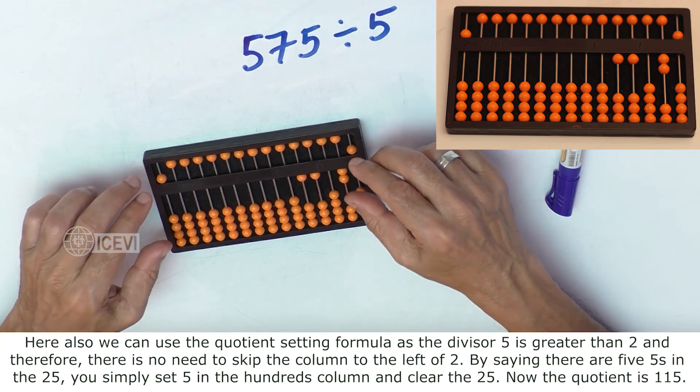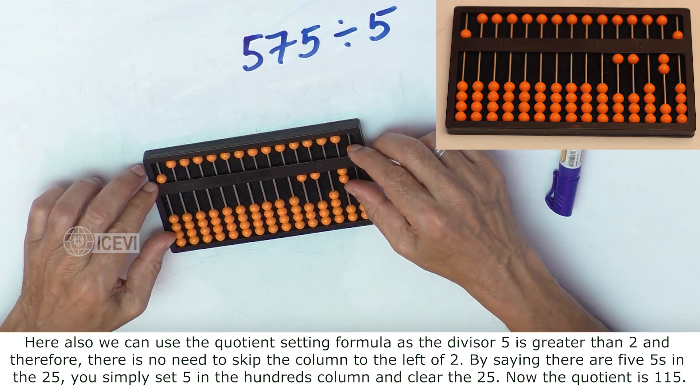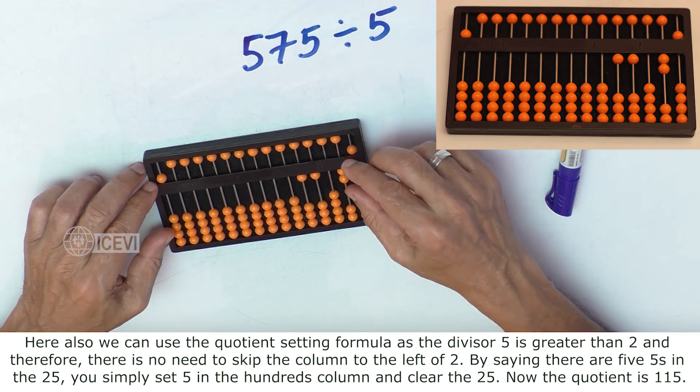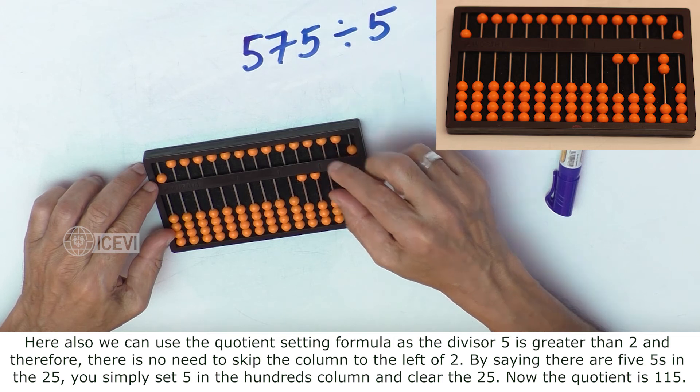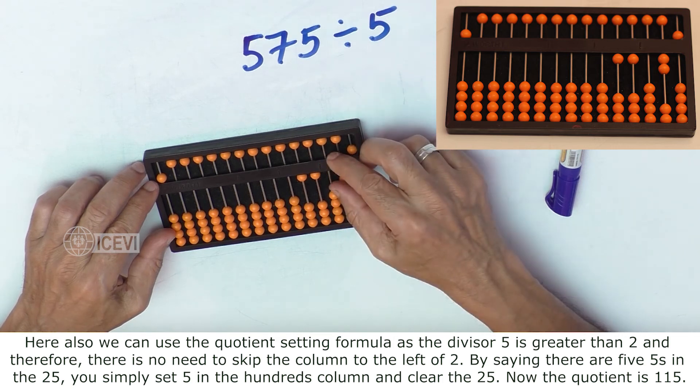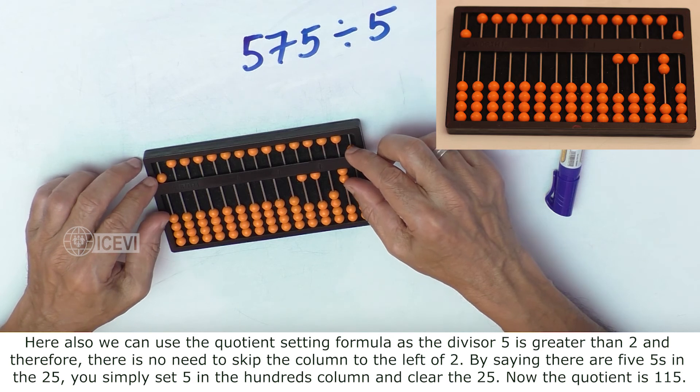Here also, we can use the quotient setting rule. As the divisor 5 is greater than 2, there is no need to skip the column to the left of 2. By saying there are five 5's in the 25,